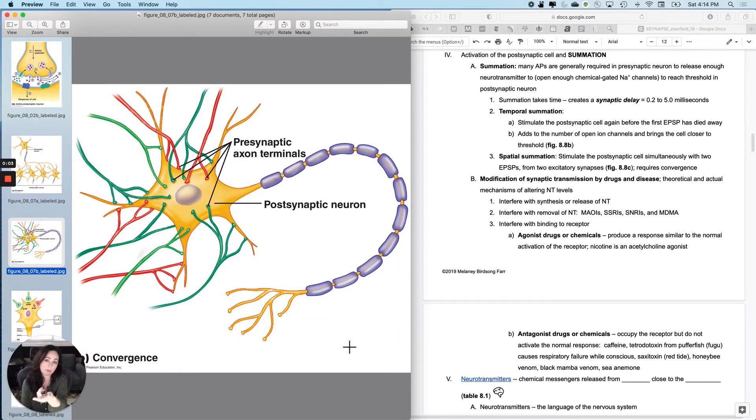So how does this postsynaptic cell know what to do? How do you get this postsynaptic cell either to get an action potential or not get an action potential? Let's say we're trying to make it get an action potential, but we've got all of these conflicting goals with these different neurons.